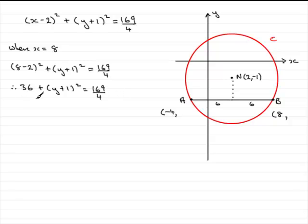Okay now to solve this equation there's no need to expand the bracket in a situation like this. All you need to do is just take away 36 from both sides and if you do that you've got (y plus 1)² equals 169 over 4 minus 36. And if you do that what you get is 25 over 4, 25 quarters in other words.